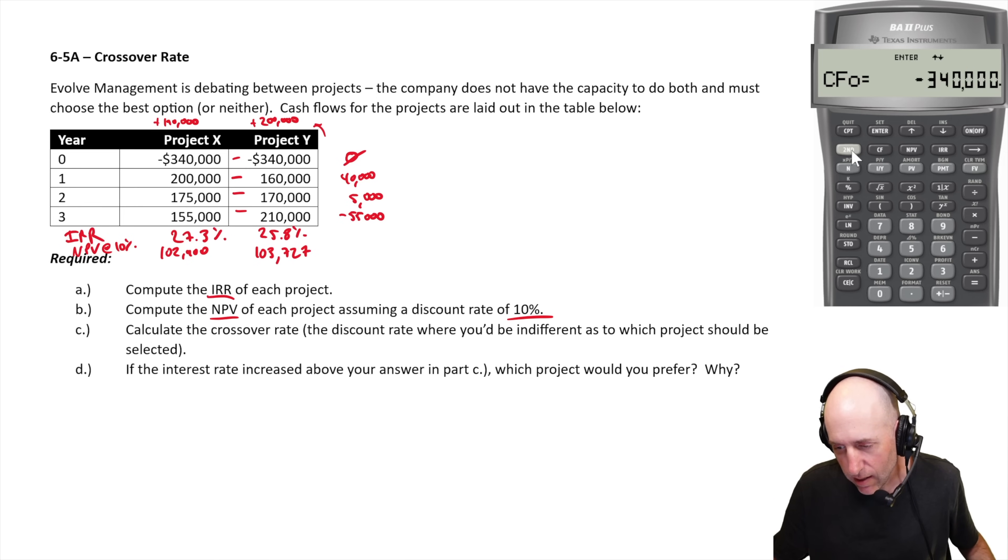And we just enter these as cash flows into our financial calculator. So let me clear. CF, second function, clear. So I put them in as cash flows. CF at time zero is zero. Cash flow at time one, 40,000 positive. Enter. Cash flow at time two, 5,000. Enter. And the cash flow at time three, 55 negative. Enter.